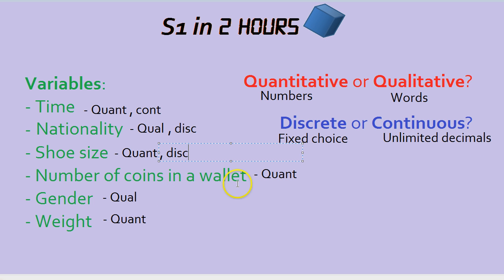What about the number of coins in your wallet? Again, that would be discrete. You can have 5 coins, 6 coins, or 1,000 coins, but you can't have 6.589 coins.